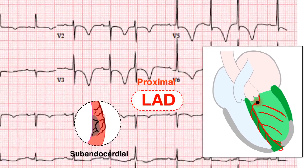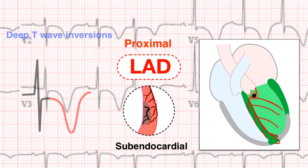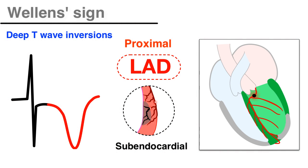These deep anterior T wave inversions are called Wellens sign, named after Dr. Hein J.J. Wellens. It is often due to subtotal occlusion of the proximal LAD.